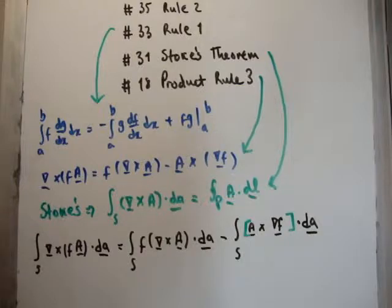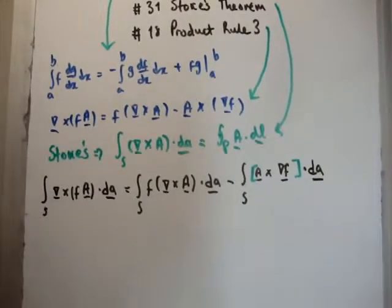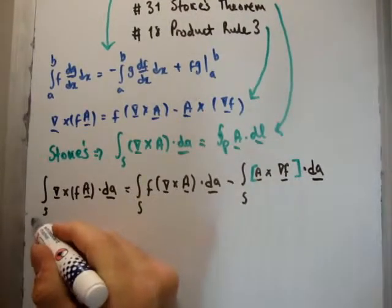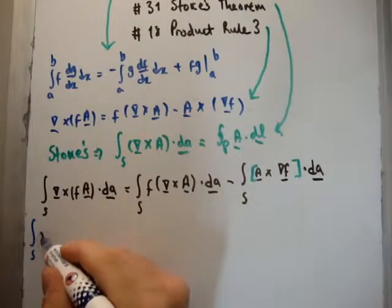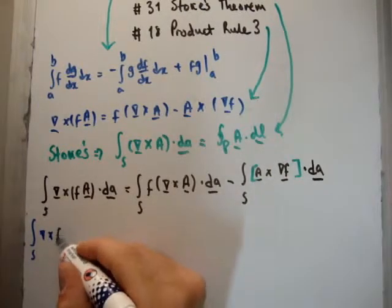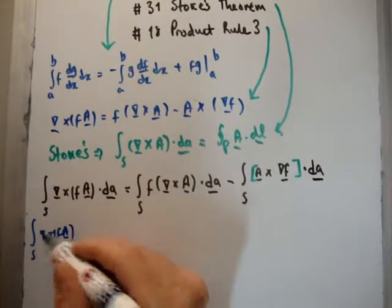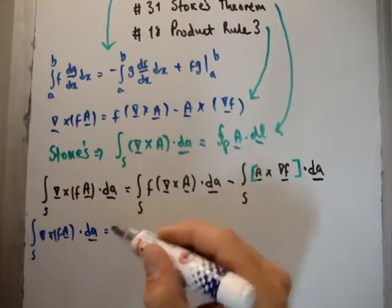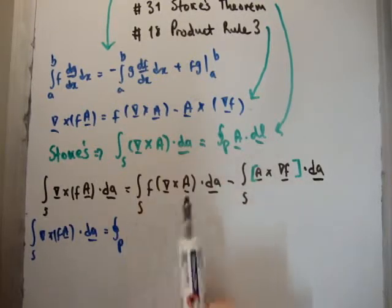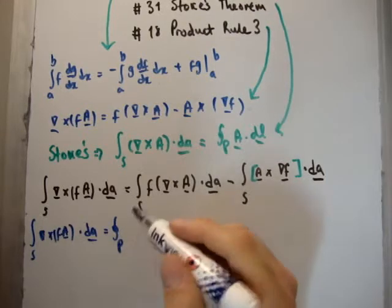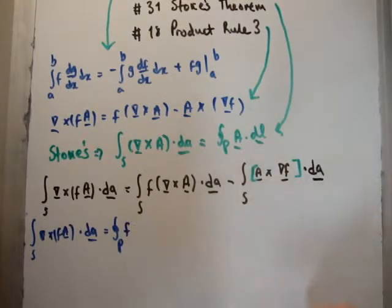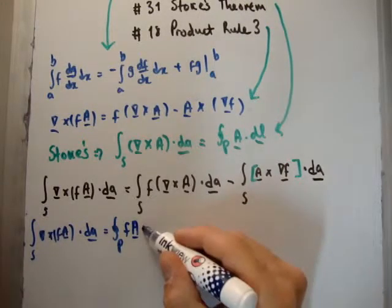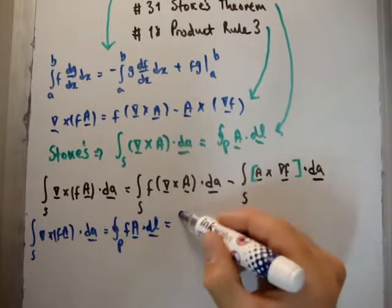Okay, so if you look at Stokes' theorem, we can apply Stokes' theorem as follows. So we rewrite the whole thing, applying Stokes' theorem, as the integral over the surface of the curl of f times A. Okay, so that's the curl there, dot dA. That's going to be equal to the path integral. So we're using Stokes' theorem to go to a path integral or a line integral of f times the vector A dot dL. Okay, so that's Stokes' theorem, and we have the other terms left over.